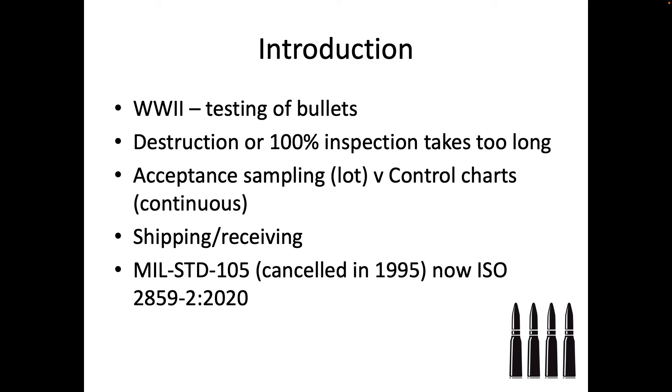So acceptance sampling is the idea that you're going to take a lot or a bunch of items and then you sample those, versus a control chart where you're going to be inspecting these things sort of on a continuous basis. Every hour, every half hour you take three or four samples and you test them. That's what we've been doing before in this class, but this is a little bit different way of sampling.